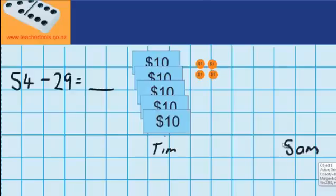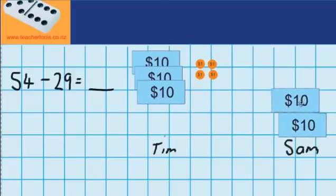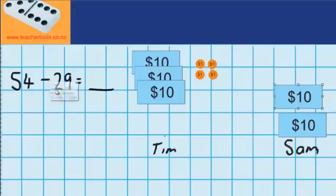And he needs to end up with $29. Well to start with I could give him two $10 notes. There's one $10 note and there is the second $10 note. So I've given him this part, the 20.